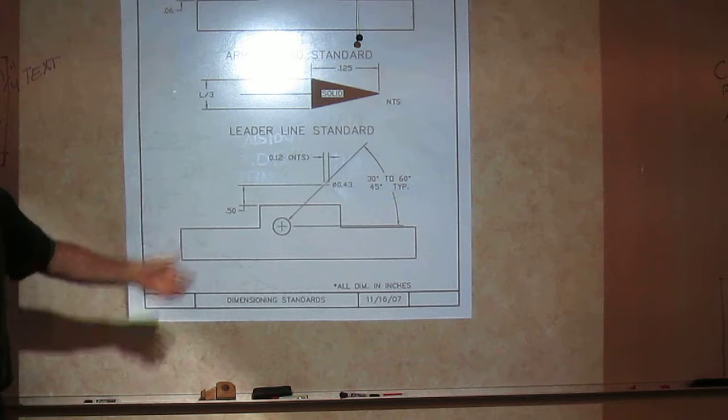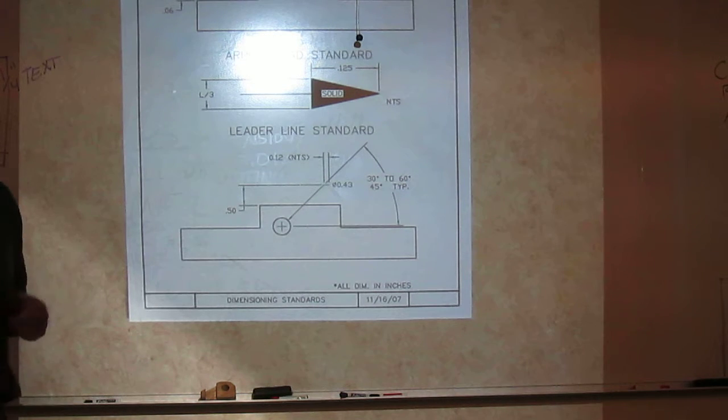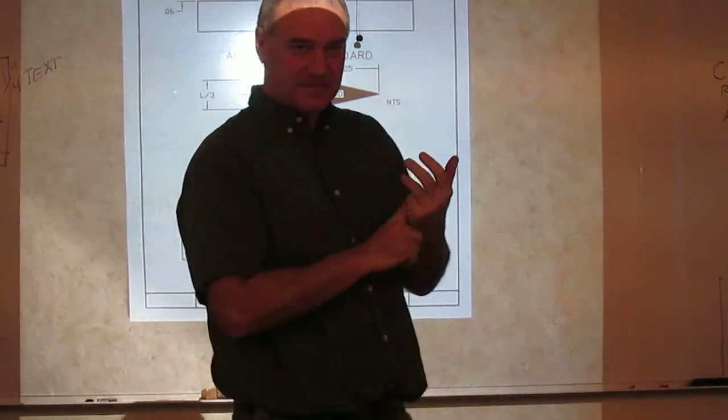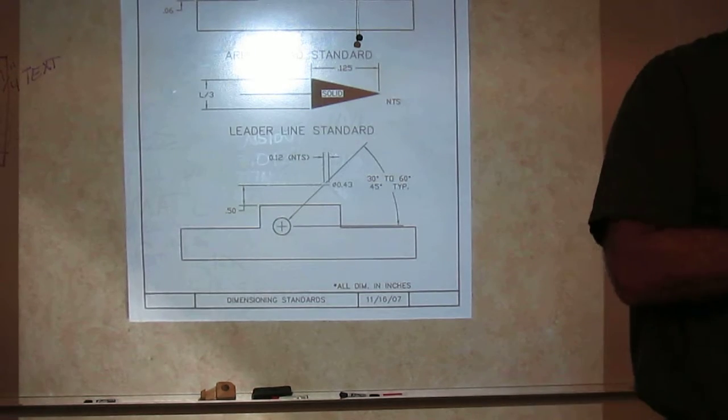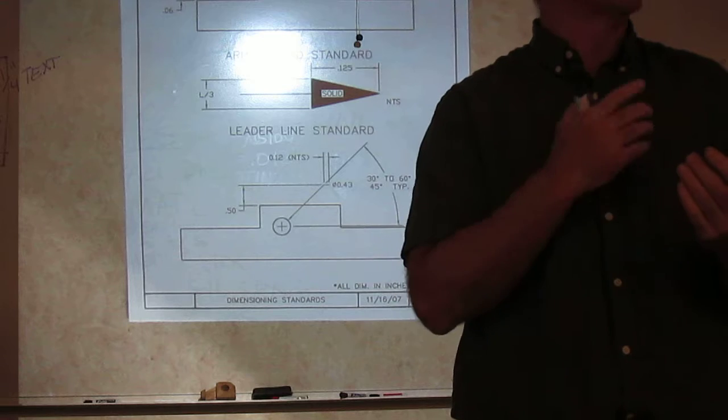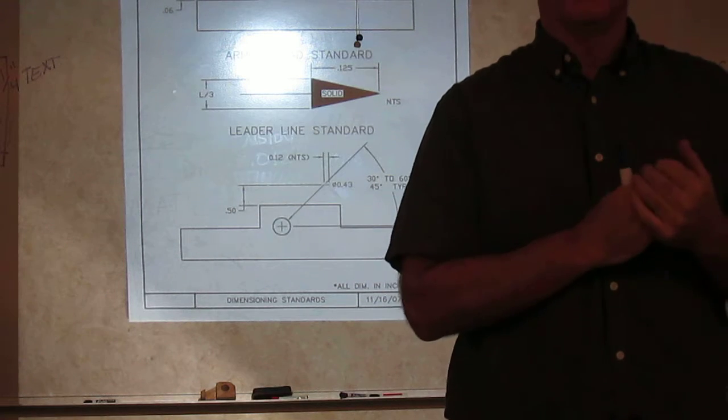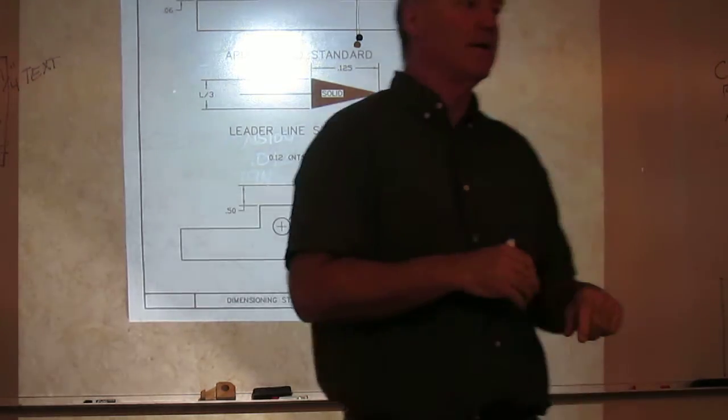In essence, what is a leader line? It's kind of a cross between an extension and a dimension. It uses all the same stuff as an extension line. But it also uses all the same things as a dimension line. Because it's got text. It's got a termination arrow. Things of that nature. So, it's kind of its own beast where it combines the other two. But we call it a leader line.